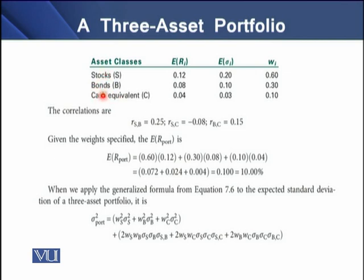For each of the individual assets, we have corresponding expected rate of return, expected standard deviation, and the corresponding weight. Using these values, we determine the correlation between SB, between SC, and between BC.